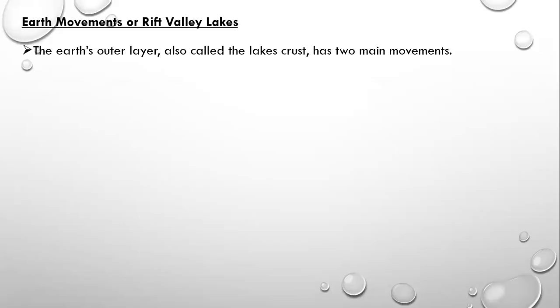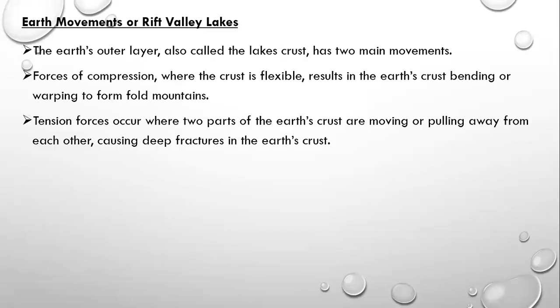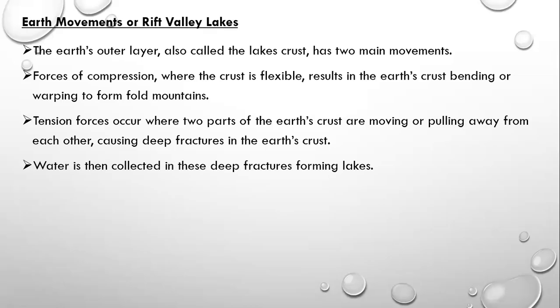Rift valley lakes are formed through earth movements. The earth's crust has two main forces: compression and tension. Forces of compression cause the crust to bend and warp, forming fold mountains. Tension forces occur where two parts of the earth's crust pull away from each other, causing deep fractures. Water then collects in these deep fractures, forming rift valley lakes.